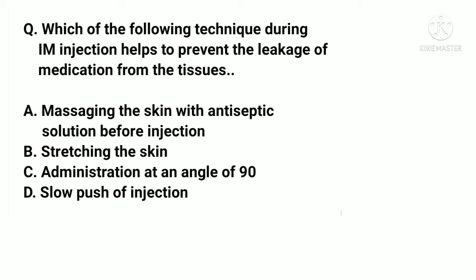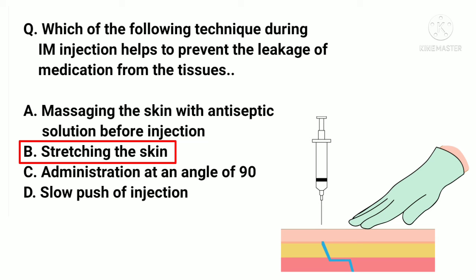Which technique during IM injection helps to prevent leakage of medication from the tissue? Options: A. Massaging the skin with antiseptic solution, B. Stretching the skin, C. Administration at an angle of 90 degrees, D. Slow push of injection. The correct answer is B. Stretching the skin leads to the Z-track technique — stretching creates a zigzag arrangement of skin and tissue which prevents leakage of medication.